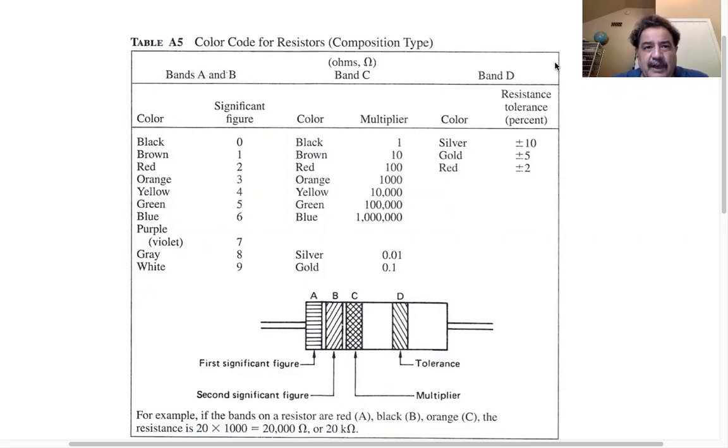And that's what I have presented here. This is table A5, you have this table in your appendix from your physics laboratory experiments manual by Wilson and Hernandez Hall, eighth edition. This is table A5, it's color code for resistors, composition type it says in the parentheses.